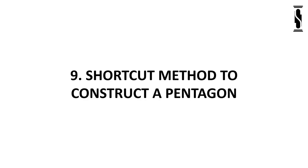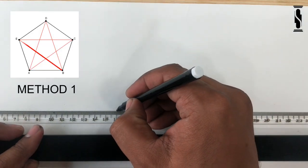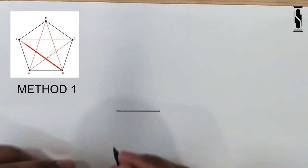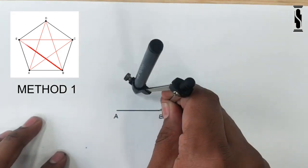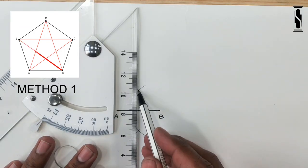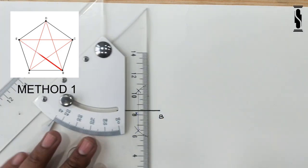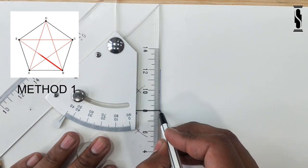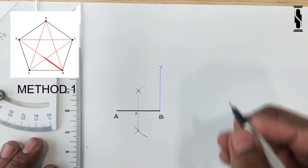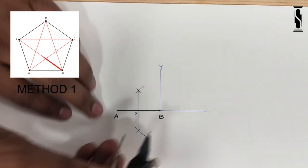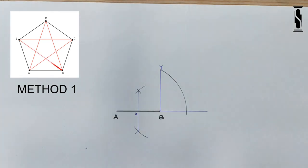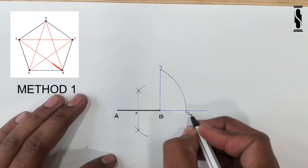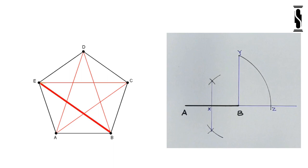Shortcut method to construct a pentagon, Method 1. The aim of this method is to discover the length of the diagonal BE. Draw line AB equal to the given side of the pentagon. Mark the midpoint X on AB by bisecting it. Draw a perpendicular YB equal to the length of AB on point B. Extend the line AB. With X as center and XY as radius, draw an arc which will cut the extended line at point Z. The length of line AZ will be the length of the diagonal of the pentagon, which means BE equals EC equals CA equals AD equals DB equals AZ.